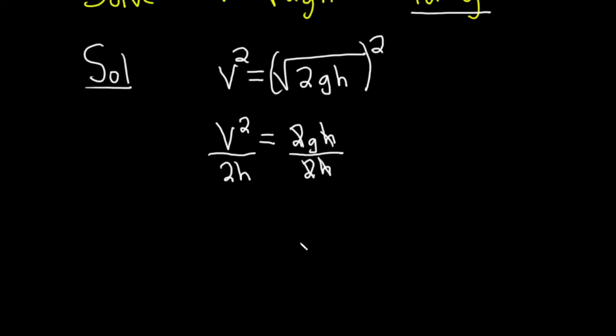So we're left with v squared over 2h. And that's equal to little g.